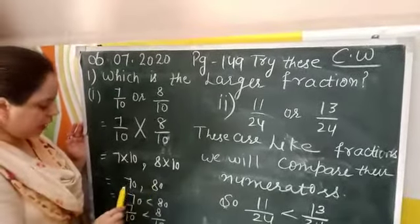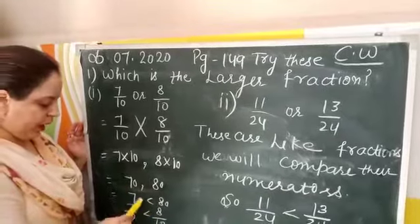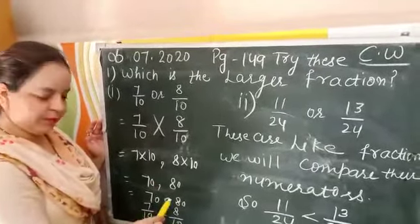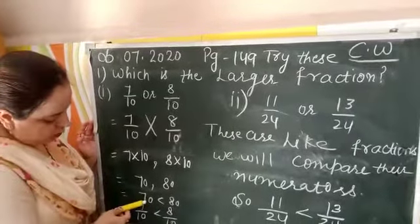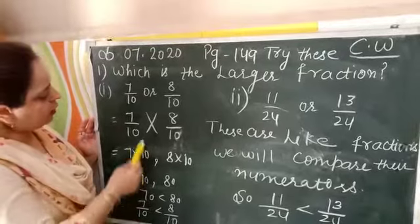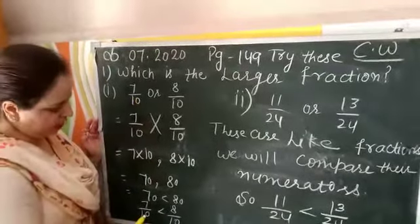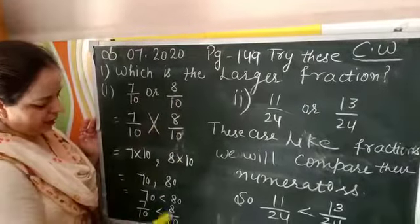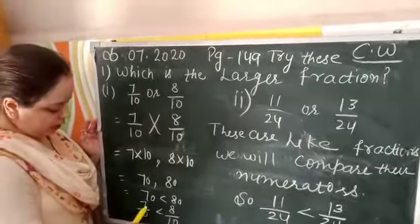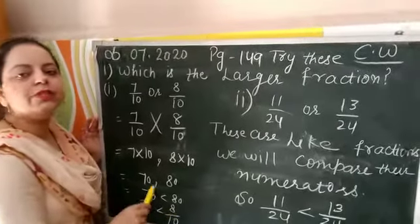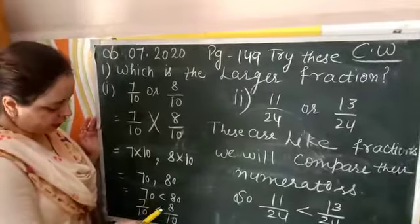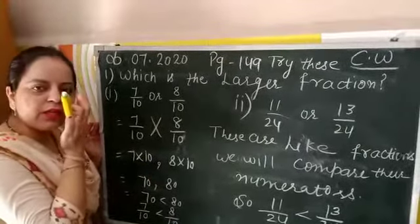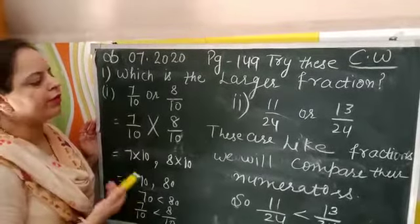Now we check: 70 is smaller than 80. Since 70 corresponds to the first fraction 7 by 10, and 80 corresponds to 8 by 10, we conclude that 7 by 10 is less than 8 by 10. Therefore, 8 by 10 is the larger fraction.